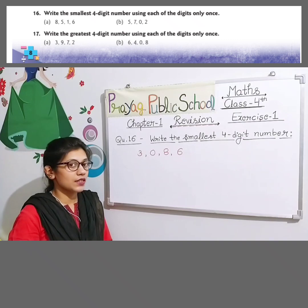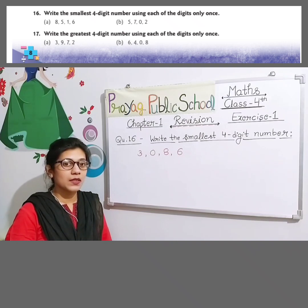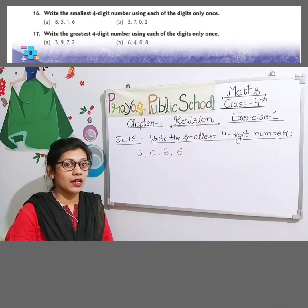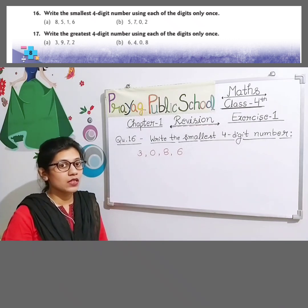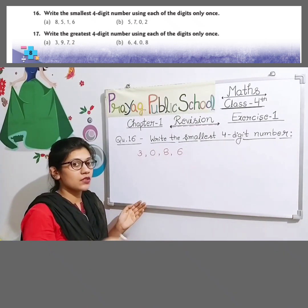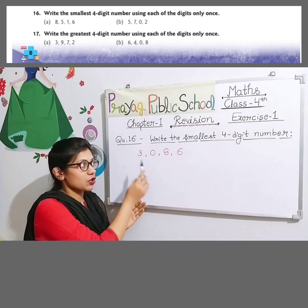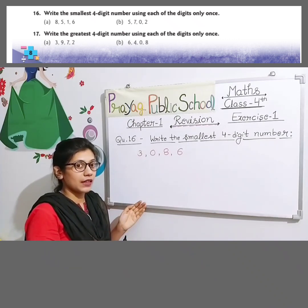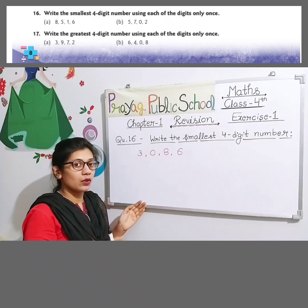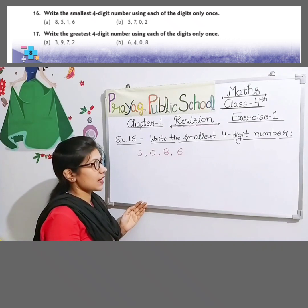Write the smallest four-digit number. Jo digits aapko given hain, unhe aapko use karna hai. Aur ek sabse chhota, smallest means sabse chhota four-digit number likhna hai jismein char ank aayein. Jo digit given hai, unka use karna hai only once — it means har ek digit sirf one time aana chahiye, usse zyada repeat nahin hona chahiye. Clear? Jab bhi humein digits given ho, sabse pehle hum question ko carefully padhenge. Jab humein smallest number likhna hota hai, to hum diye hue digits ko unke ascending order mein arrange karte hain. Ascending order means sabse pehle sabse chhota digit, phir usse bada, phir usse bada, aur sabse last mein sabse bada.